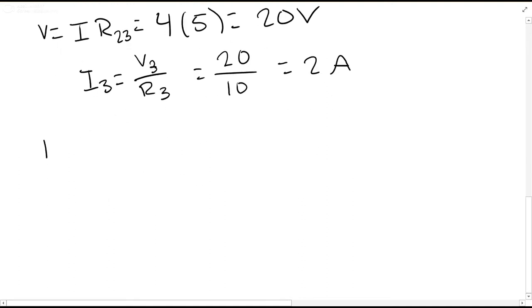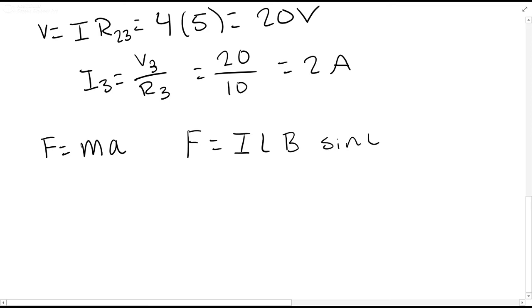We're trying to find acceleration, which is commonly seen in force equals mass times acceleration. We have another force from the magnetic field: current times the length, like a wire, times the magnetic field times sine of phi.